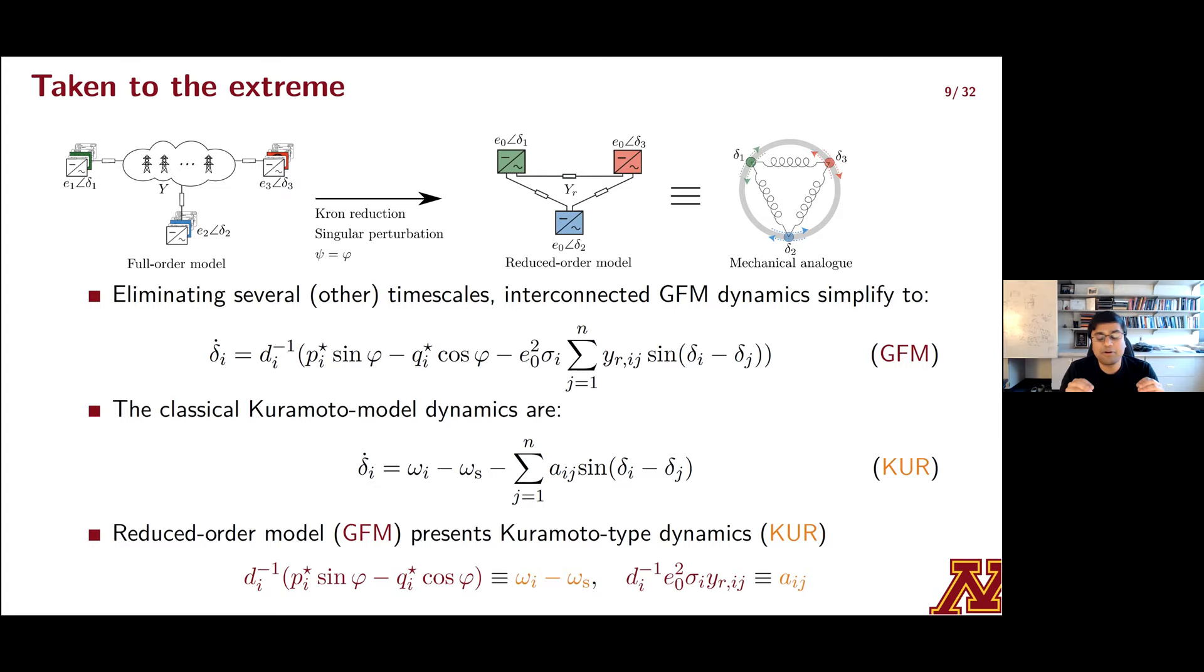And you assume that the GFM resources are all tuned so that their rotation angles that are in their primary controllers exactly match the impedance angles of the interconnecting transmission lines, then what you get is a reduced order model for the phase dynamics shown in this equation tagged GFM. This is all that's left. Entries D sub I are actually encoding the frequency power droop behavior. This is going to be different depending on what type of GFM resource you have.